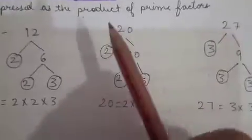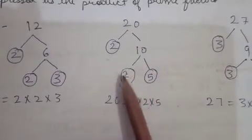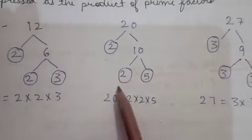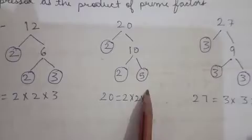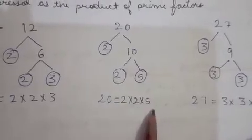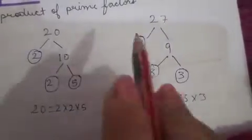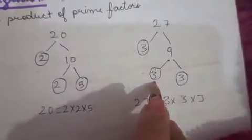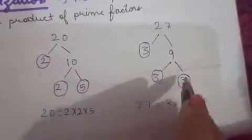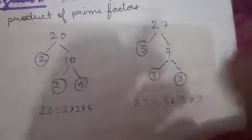Similarly, for 20, starting with 2, it goes to 10. 10 is not prime, so again with 2 it goes to 5. Both 5 and 2 are prime, so we stop. The prime factors are 2, 2, and 5. For 27, it doesn't come in the 2 table. The next prime is 3. 27 appears in the 3 table at 9. 9 is not prime, so it becomes 3 multiply 3. So 27's prime factors are 3 multiply 3 multiply 3.